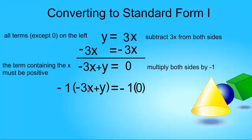So, negative 1 times negative 3x, a negative times a negative, is positive, and so I'm left with 3x. And negative 1 times positive y is negative y. And that is equal to negative 1 times 0, or 0.